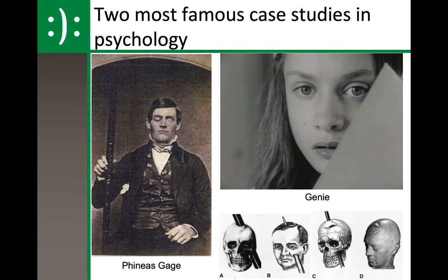Two of the more famous case studies involve Phineas Gage. You can see the diagram on the bottom right — Phineas Gage had a metal rod go right through his frontal lobe. The frontal lobe is predominantly about how we grow as a person, major decisions, and is also the emotion center of the brain. The frontal lobe of teenagers is not fully developed, which is why things are much more emotional when we're teens than in our 30s, 40s, 50s, and beyond. Him surviving that metal rod going through his brain after an explosion on a railroad track is unbelievable.